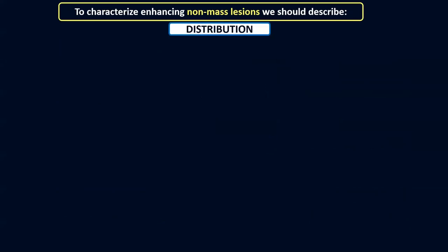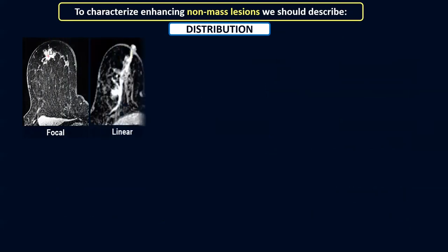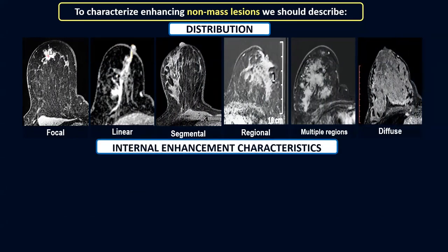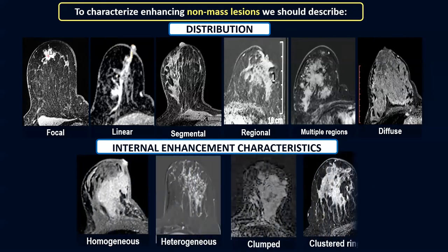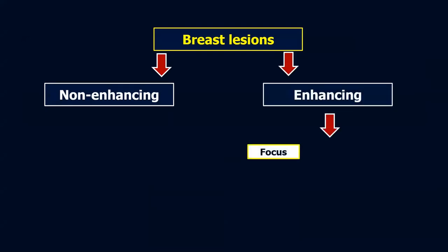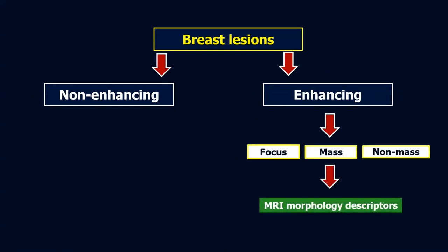We will try to apply these morphology descriptors on some lesions, following this scheme: we look at the breast lesion, determine if non-enhancing or enhancing, classify into focus, mass, or non-mass, then use the morphology descriptors to reach a diagnosis of benign or malignant.